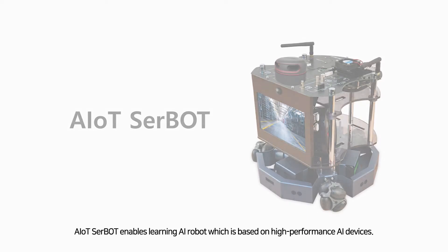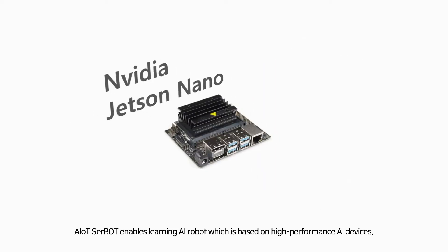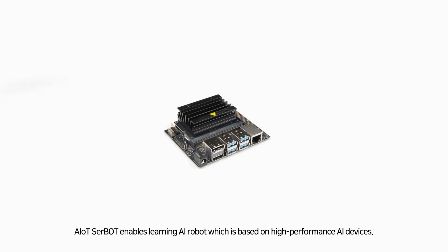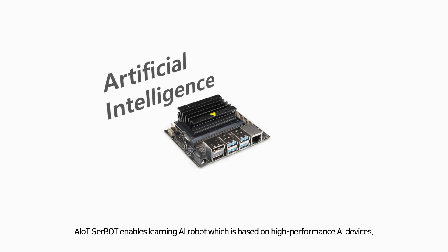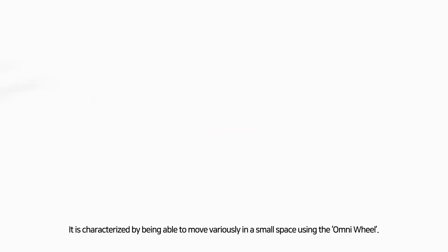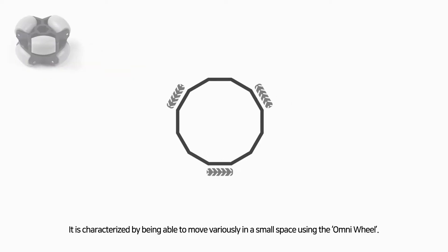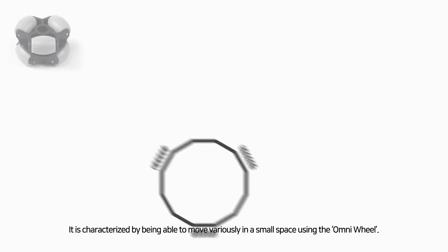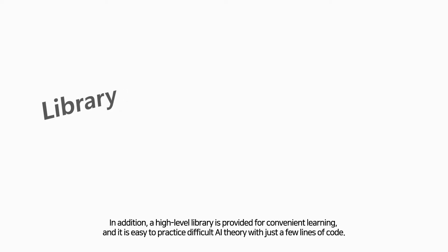AIoT Starbook enables a learning AI robot based on high-performance AI devices. It is characterized by being able to move freely in a small space using the omni-wheel. In addition, a high-level library is provided for convenient learning, and it is easy to practice difficult AI theory with just a few lines of code.